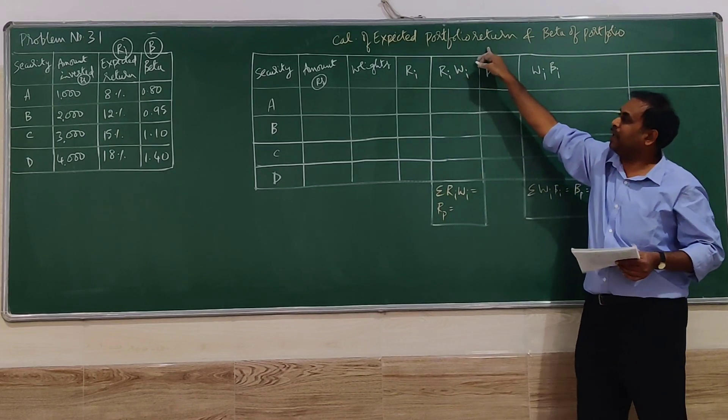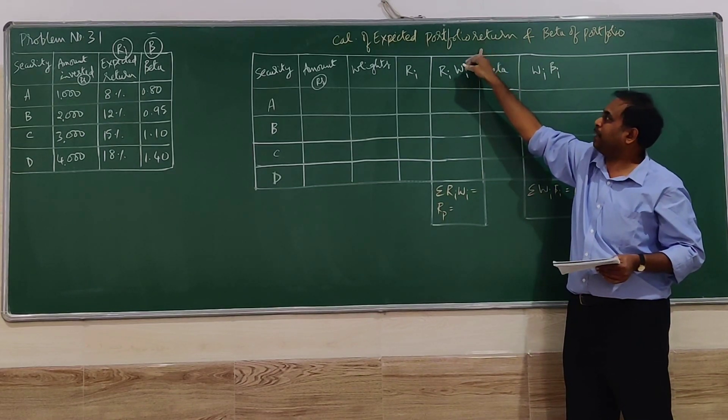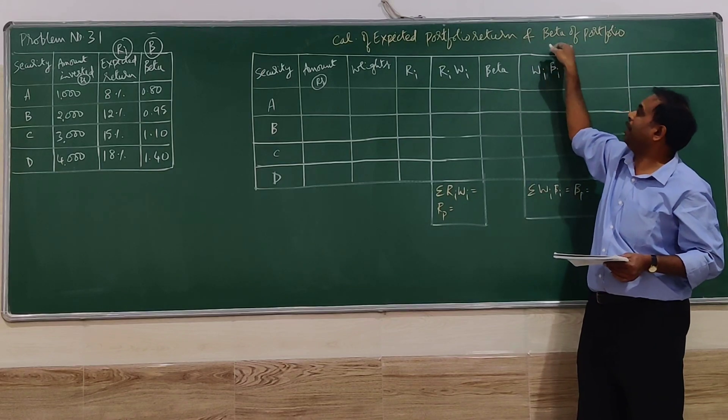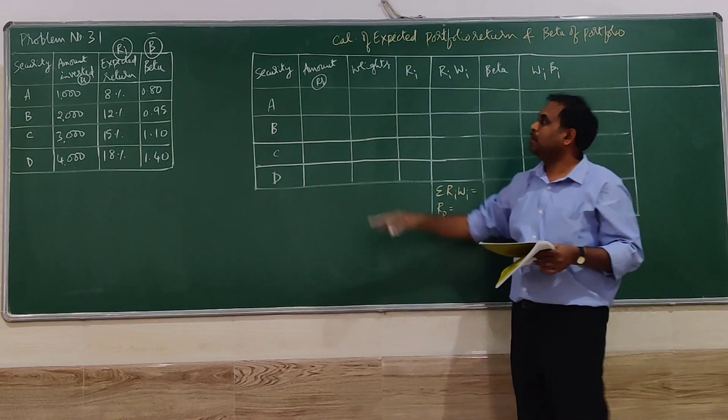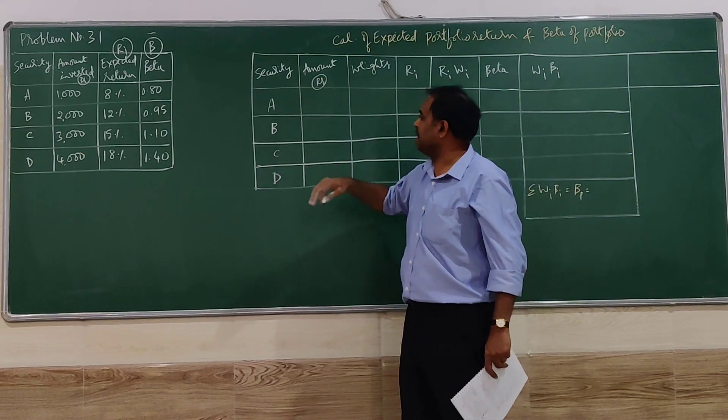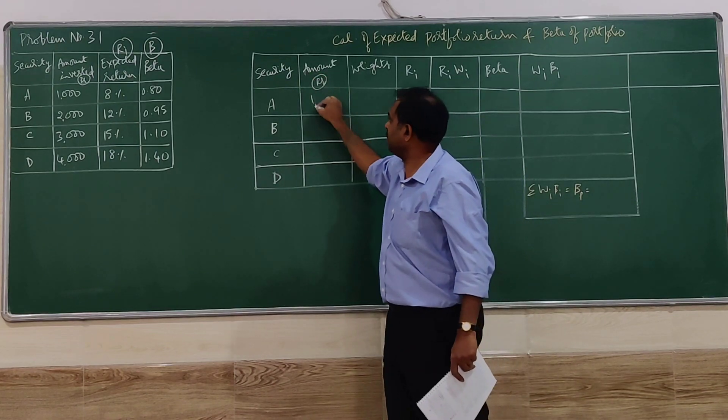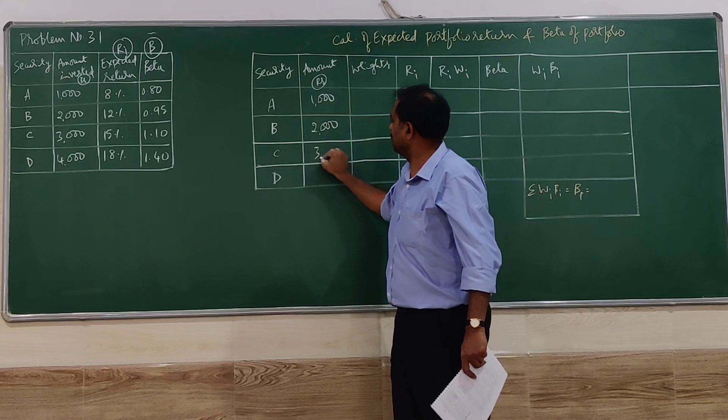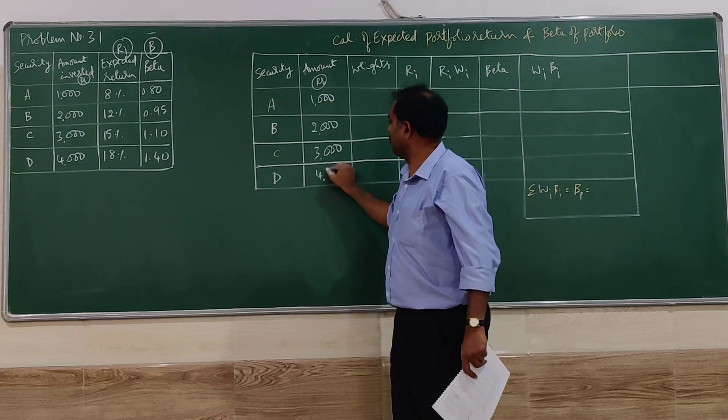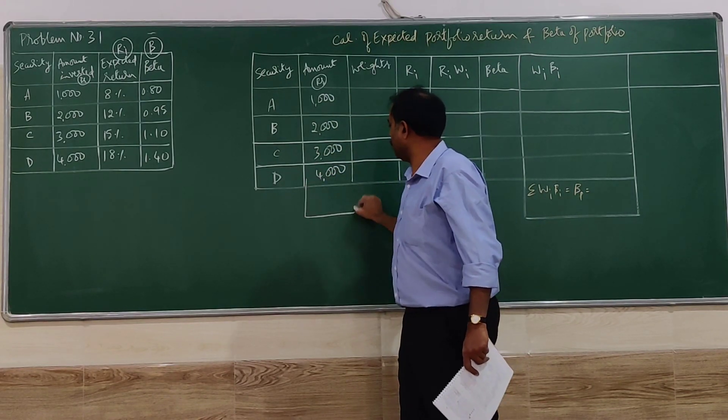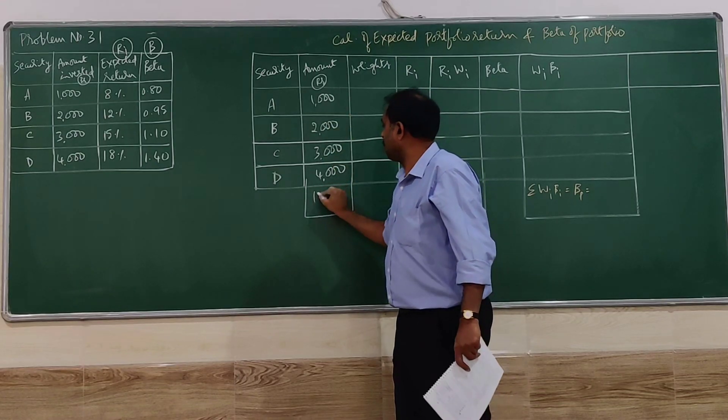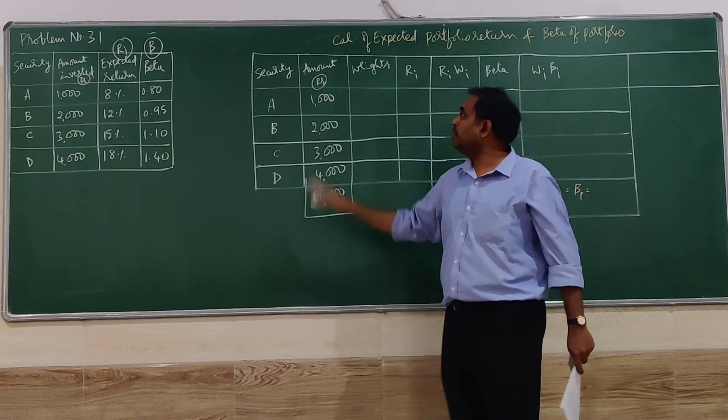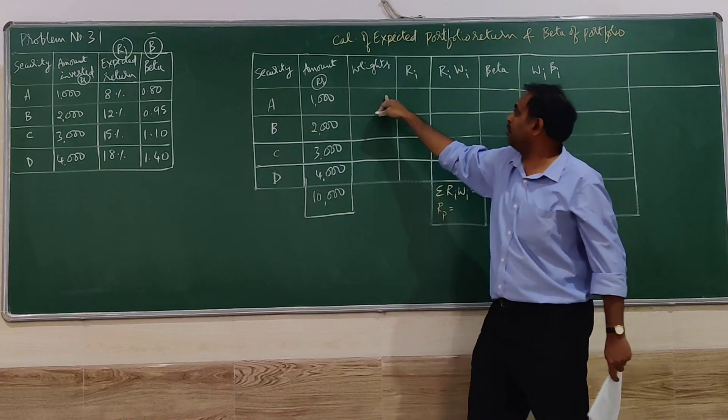I have a format ready here: calculation of expected portfolio return and beta of the portfolio. So firstly, security A, B, C, D, amount I take from the table. I'll go for the total. Total comes to ten thousand.